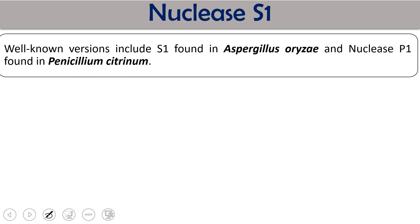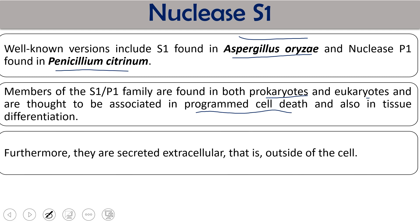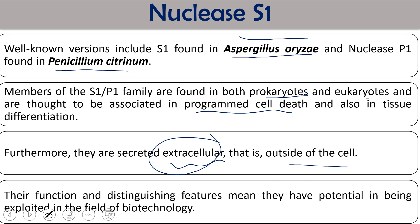The well-known version is S1 from Aspergillus oryzae from where it has been isolated first. Nuclease P1 is found in Penicillium citrinum. It is called S1 P1 members. Members of S1 P1 family are found in both prokaryotes as well as eukaryotes and thought to be associated with programmed cell death, that is apoptosis, and also in tissue differentiation. They are also secreted extracellularly.